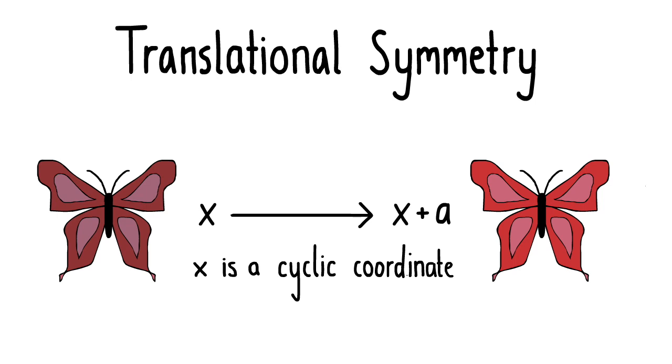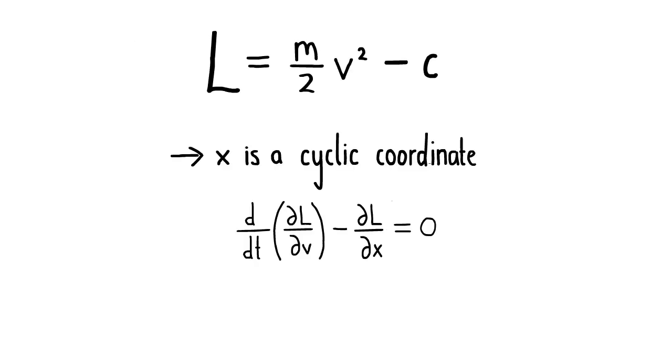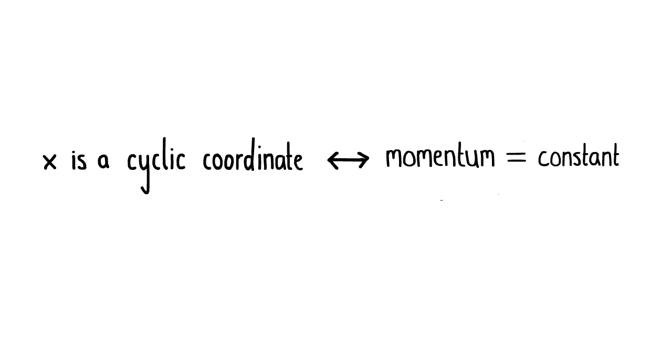Now let's compute the Euler-Lagrange equation for our Lagrangian. The partial derivative of L with respect to v is mv as we had before, but the partial derivative with respect to x is zero, since L is independent of x. So we get an equation of motion in the form the rate of change of momentum equals zero. So the momentum is constant or conserved. We have shown that in a system where x is a cyclic coordinate, the momentum is conserved.